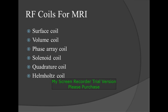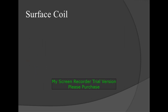There are various types of RF coils: surface coil, volume coil, phased array coil, solenoid coil, quadrature coil, and helmet coil.